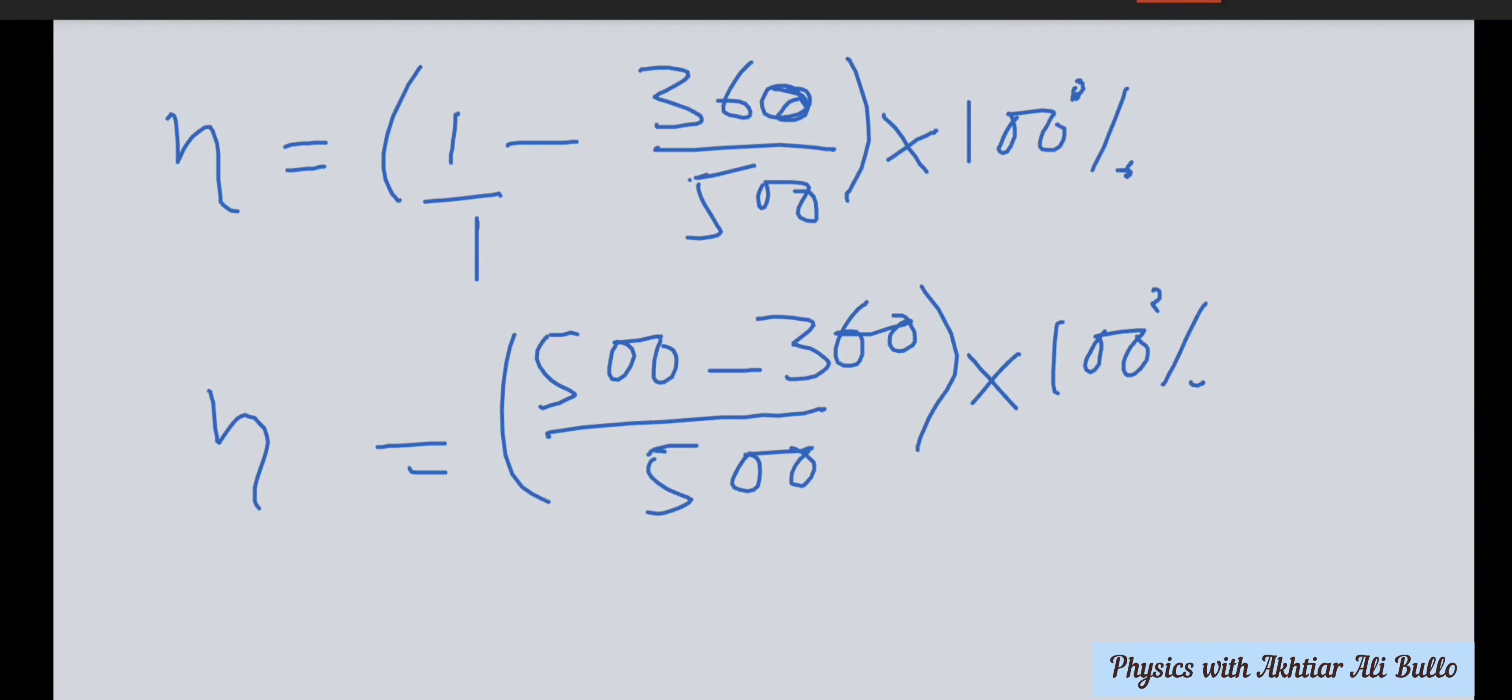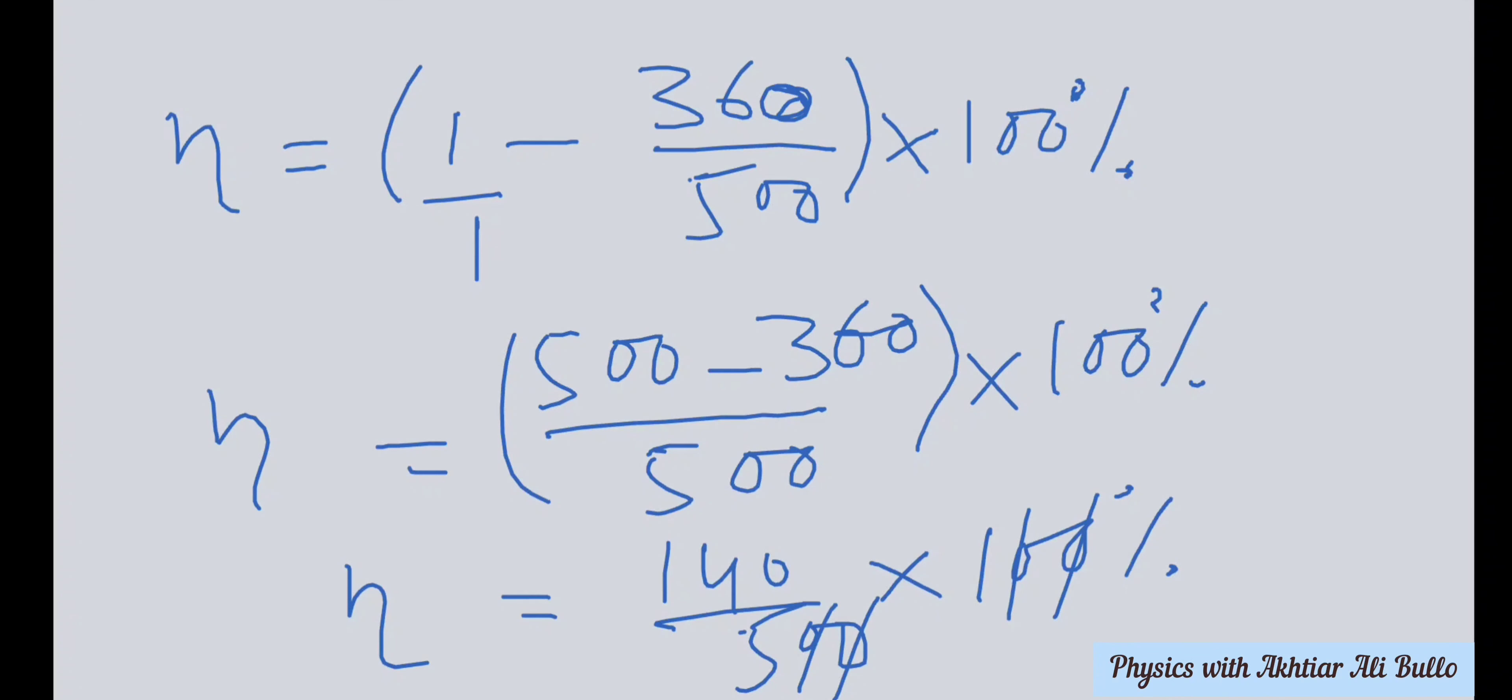500 minus 360 equals 140, so η = (140/500) × 100%. Two zeros from 100 will cancel with two zeros from 500.